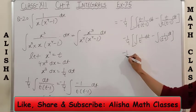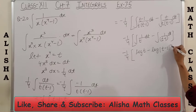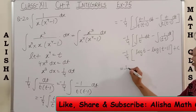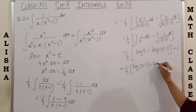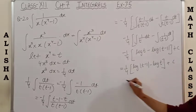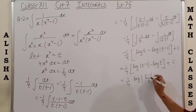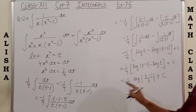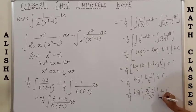Integrating: I get log t minus log(t−1) + C, which in the form log m − log n = log(m/n) gives log(t/(t−1)) + C. With the 1/4 factor, and replacing t = x⁴, the final answer is (1/4) log(x⁴/(x⁴−1)) + C, which can also be written as (1/4) log(x⁴−1/x⁴) + C. Please note down.